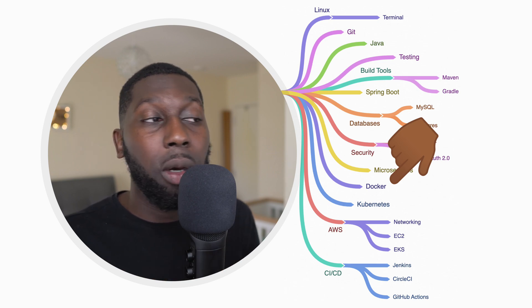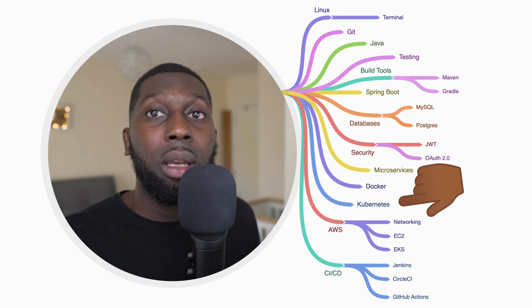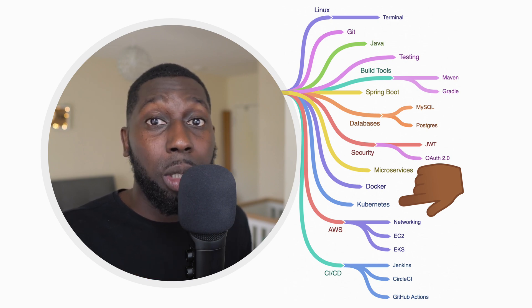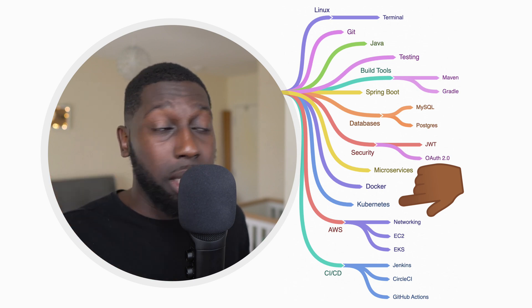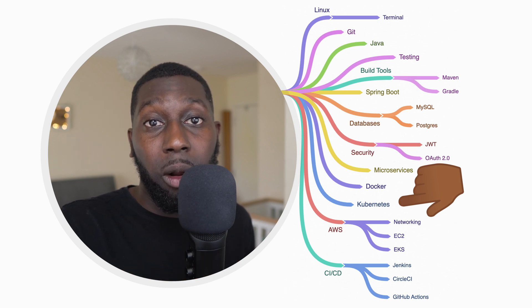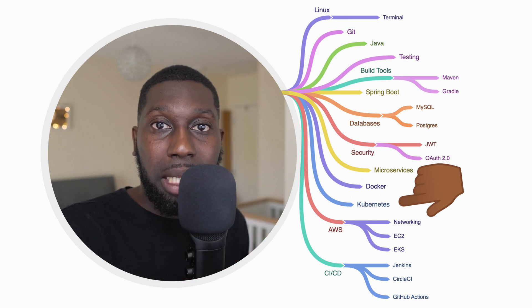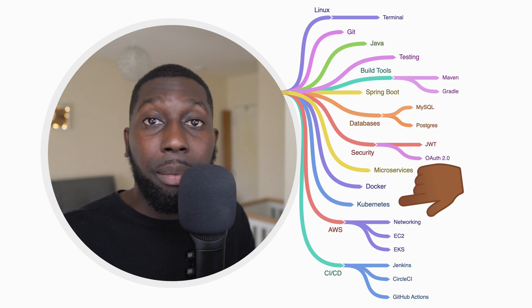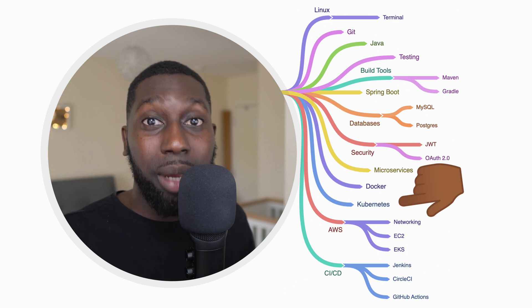Kubernetes. You can deploy your Docker container onto a VM, but if it dies, no users can access your application. Sure, you can have two or more VMs, but that doesn't scale. Kubernetes comes into play to solve that. Understand the problem Kubernetes solves — understand pods, nodes, master nodes, worker nodes, volumes, and services. Just the basics here. You don't need to know everything because Kubernetes is a beast.